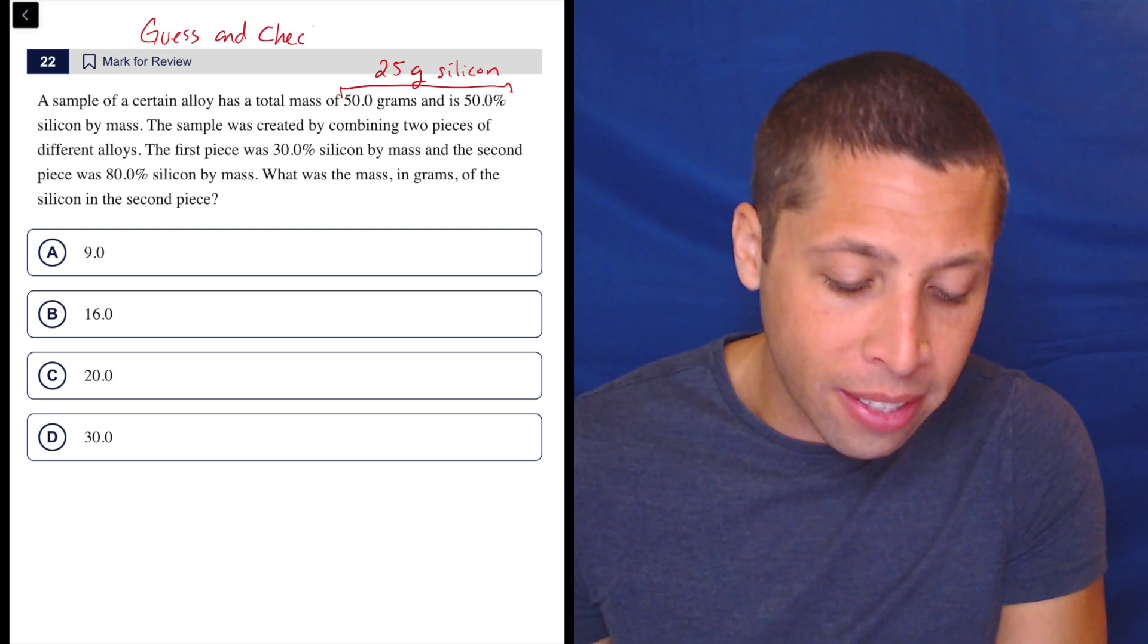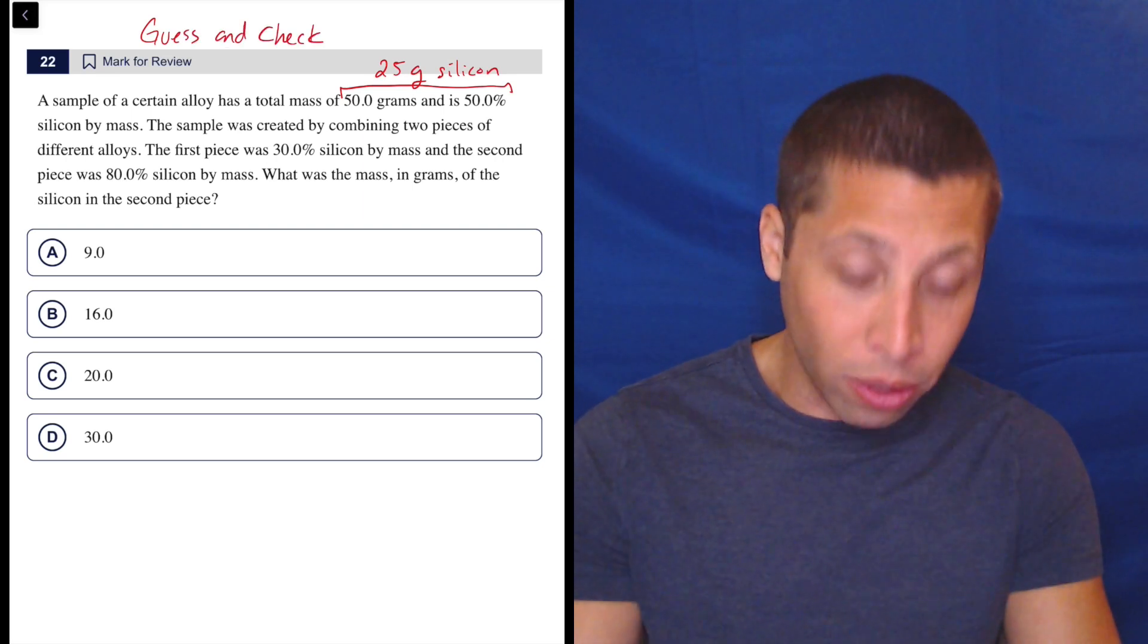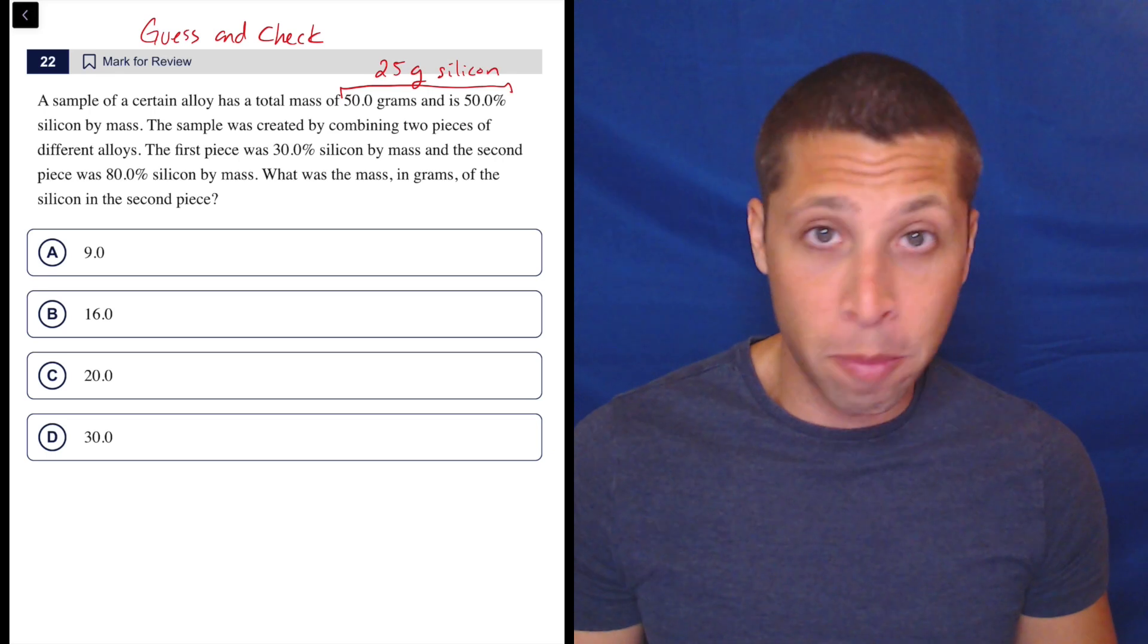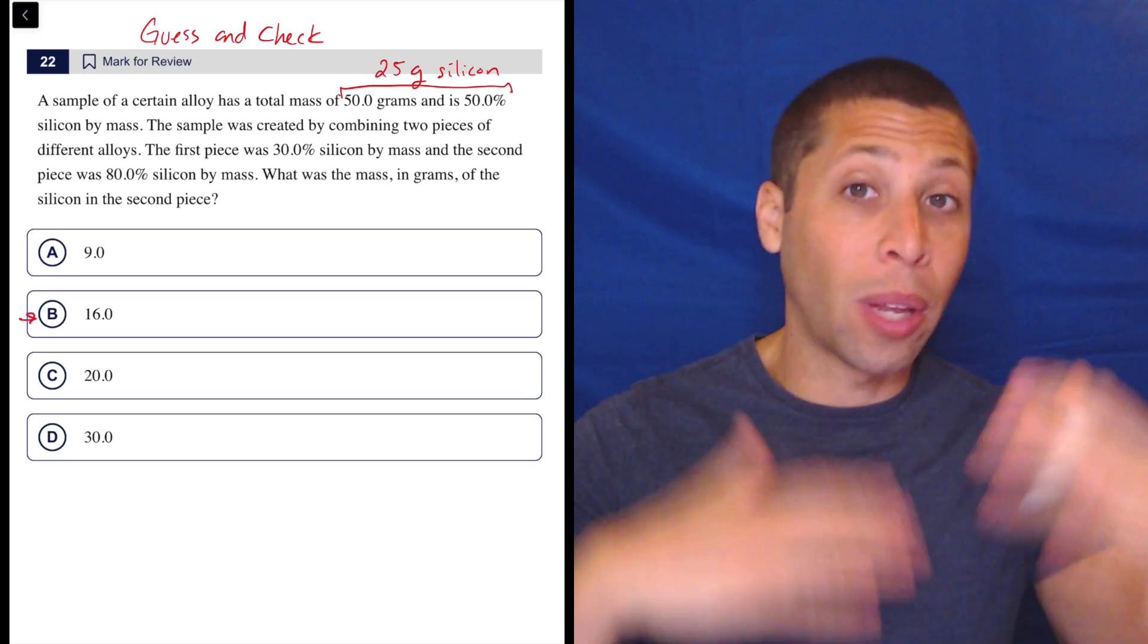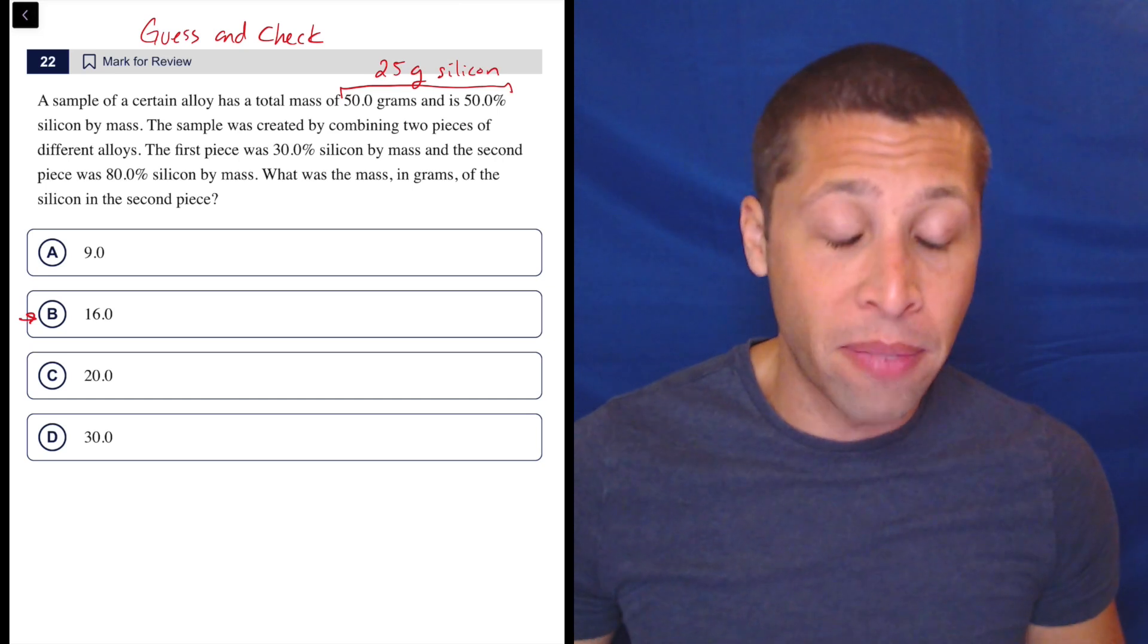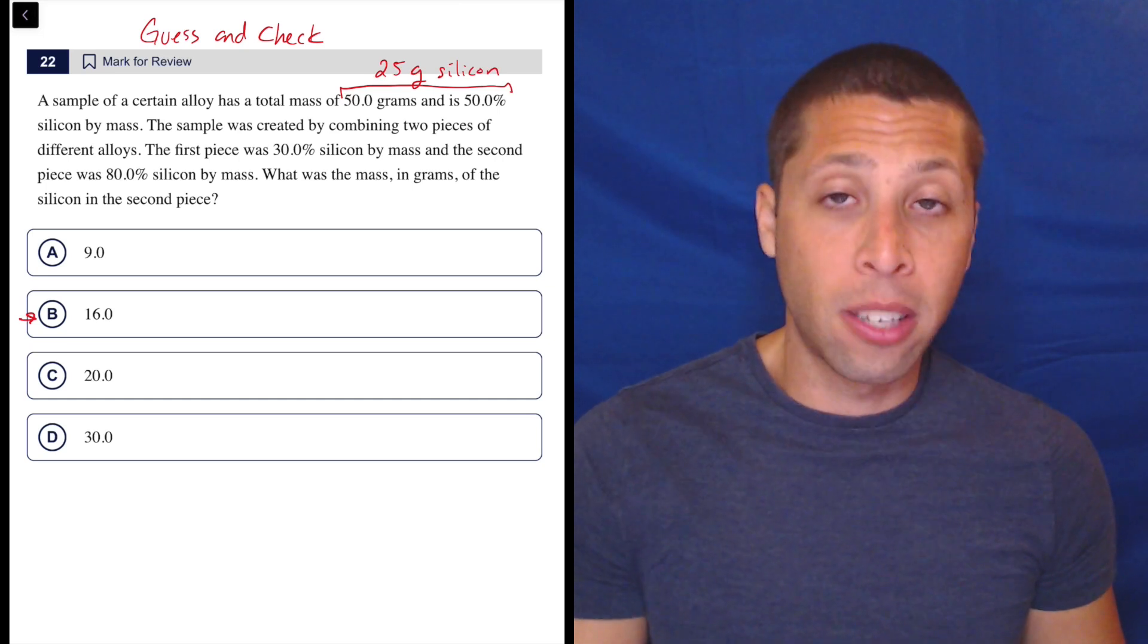We don't have to know exactly the equation because we are limited to four values. Now I would start with choice B because that's what I always start with when I guess and check. Unless it says what's the maximum or the minimum and then I might go to the maximum or minimum values.